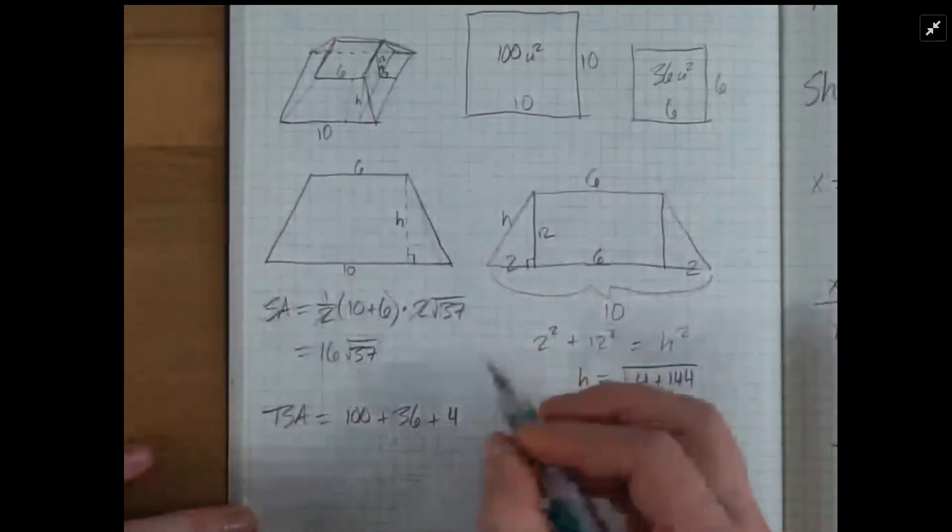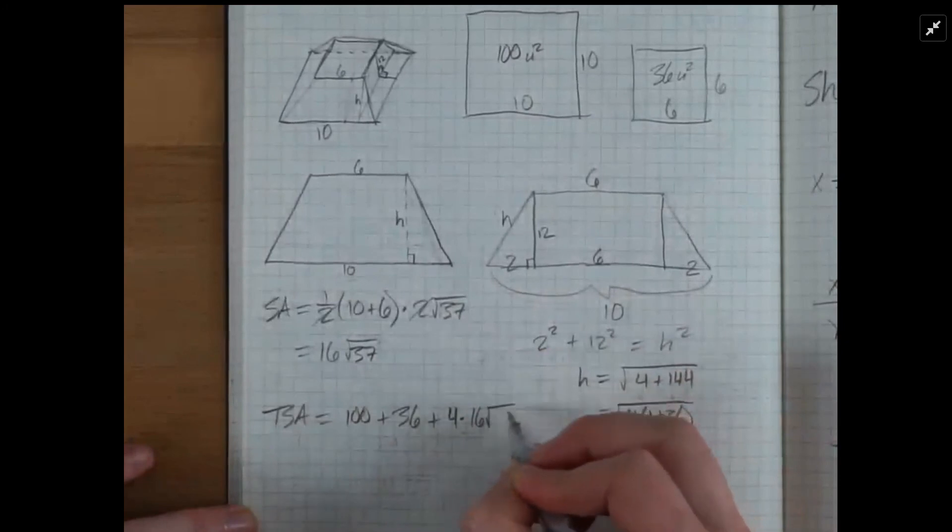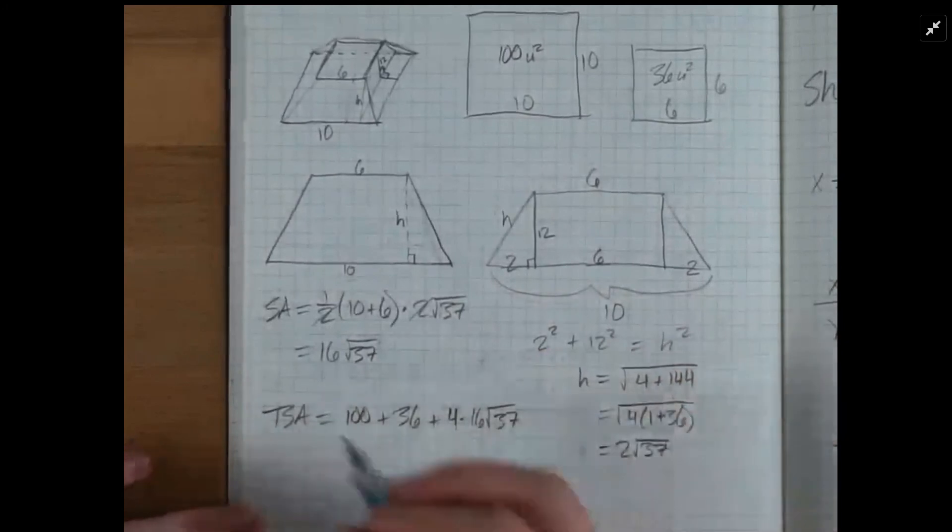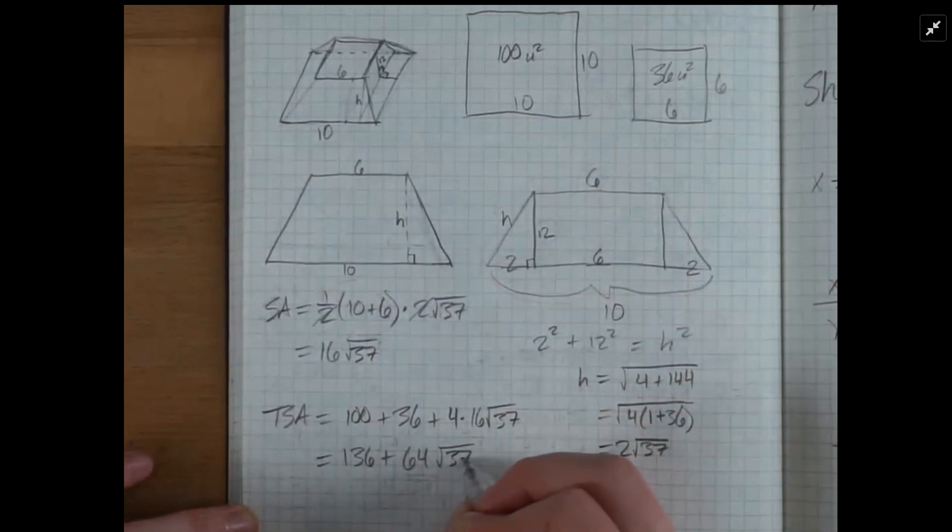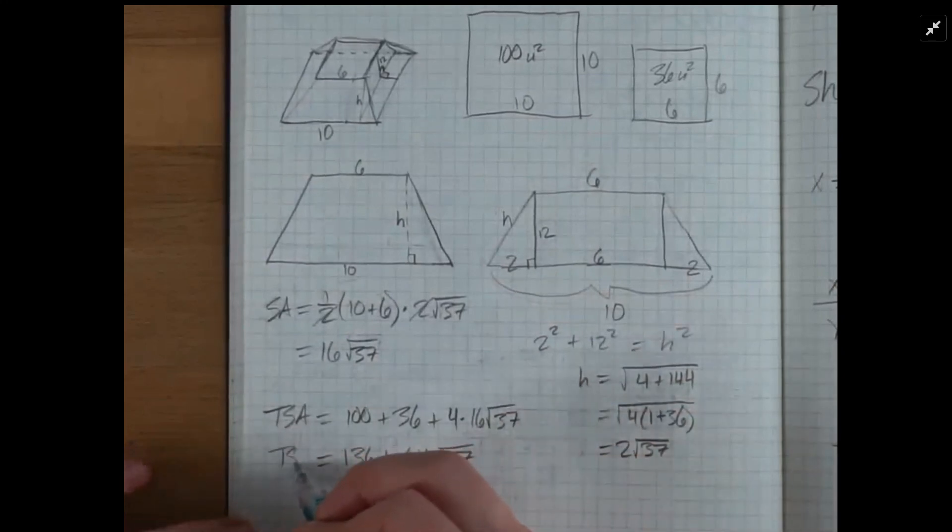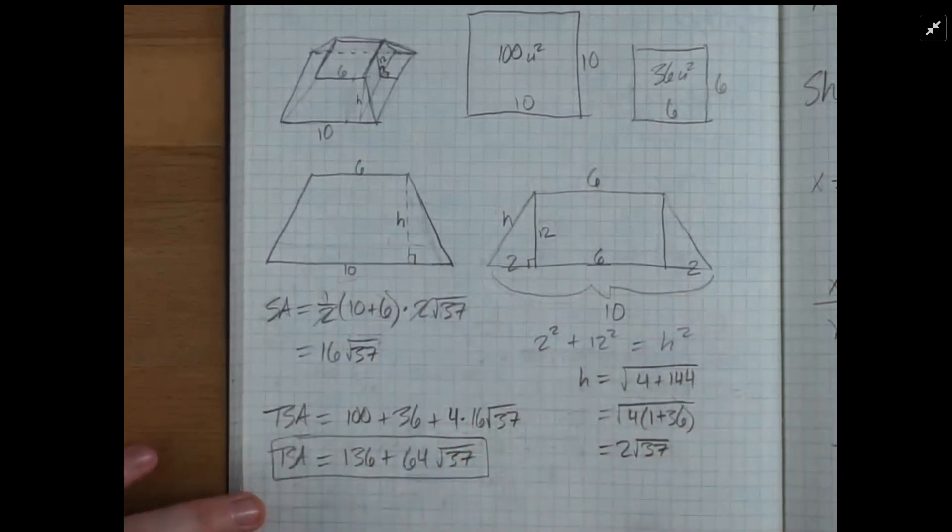plus 4 times the trapezoid, 16 square root of 37. For a total of 136 plus 64 square root of 37. And you can get a more exact figure by plugging that into your calculator.